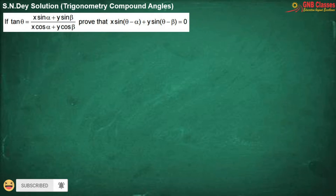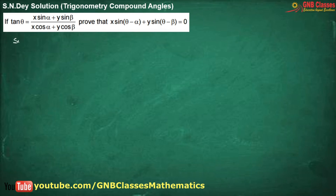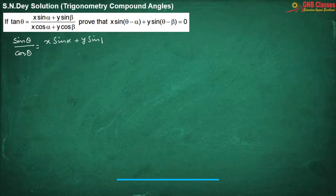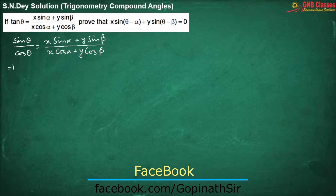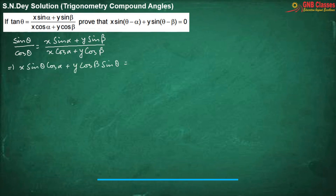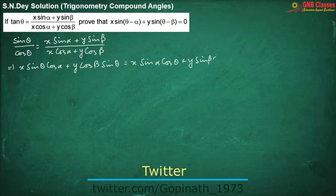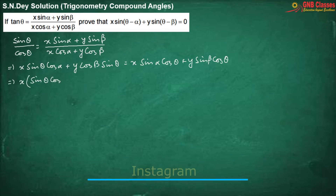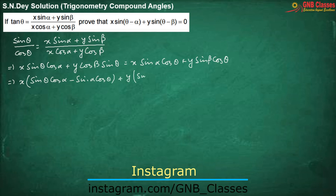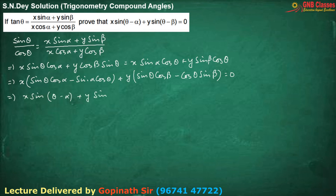In this problem, we have been given tan theta, which I am writing as sin theta by cos theta equals the given expression. Cross multiplying, and taking everything to the left hand side, we are getting the required result. Is it clear? Have you understood it? Okay.